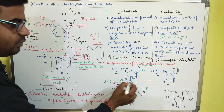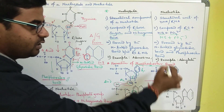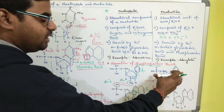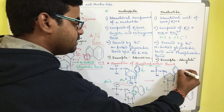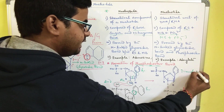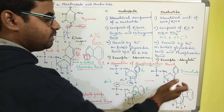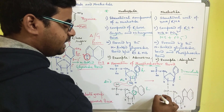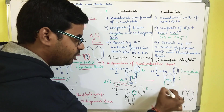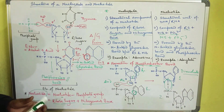This phosphoester bond leads to the formation of a polynucleotide chain. When we have two nucleotides joined this way, it is specifically called a dinucleotide — a structure made up of nucleotide number one and nucleotide number two joined by a phosphodiester bond.